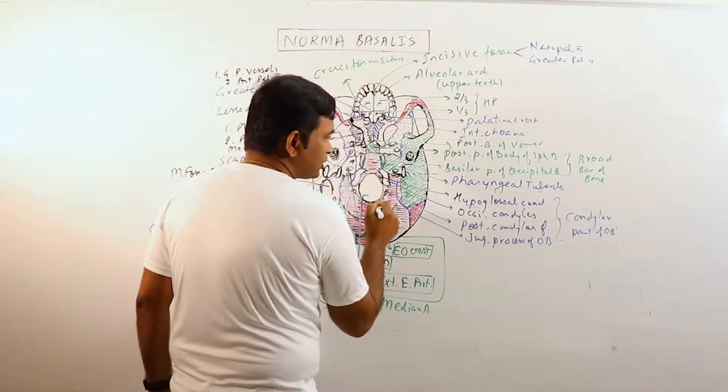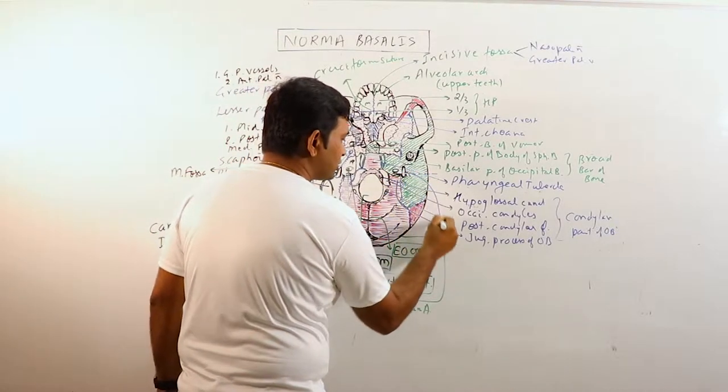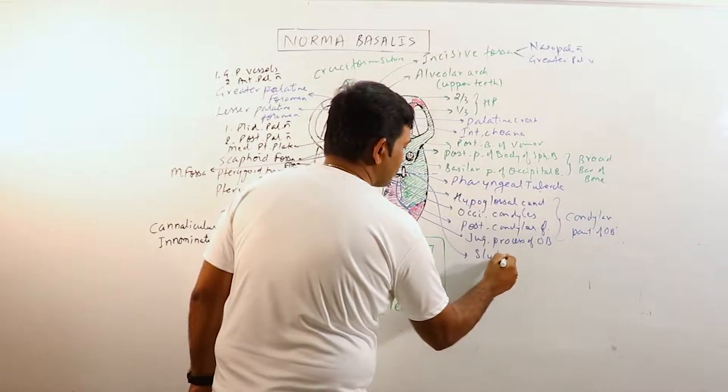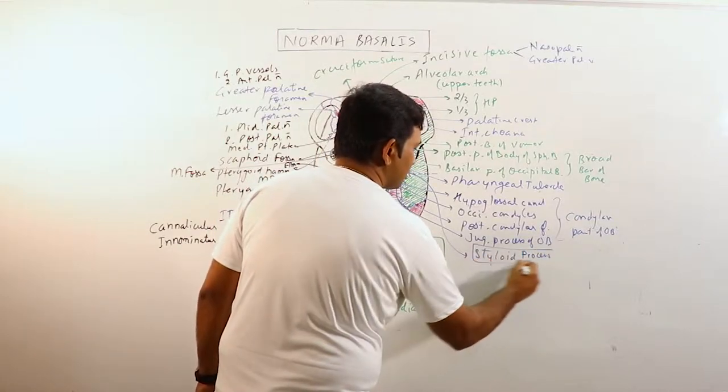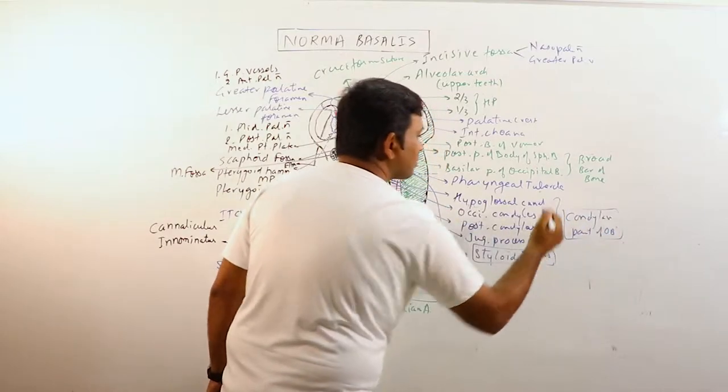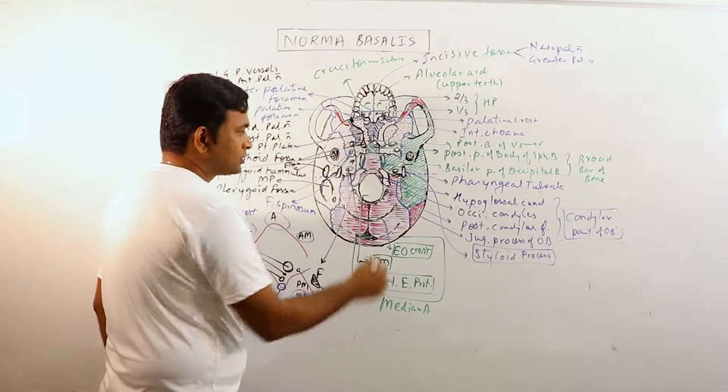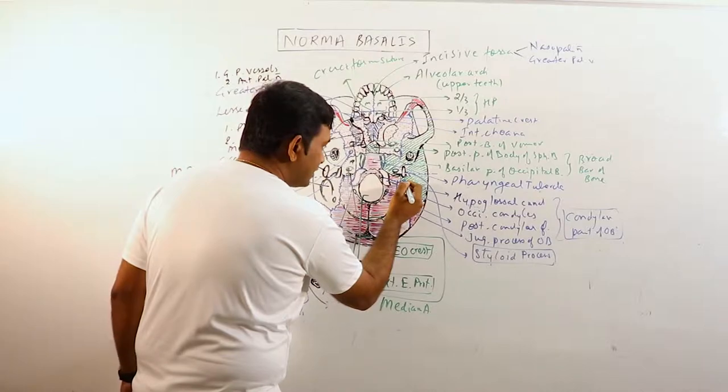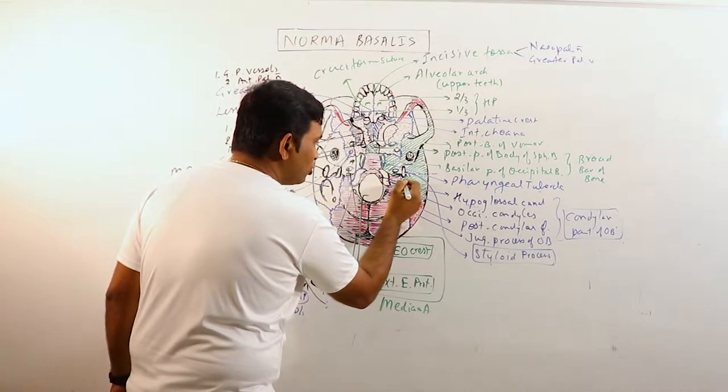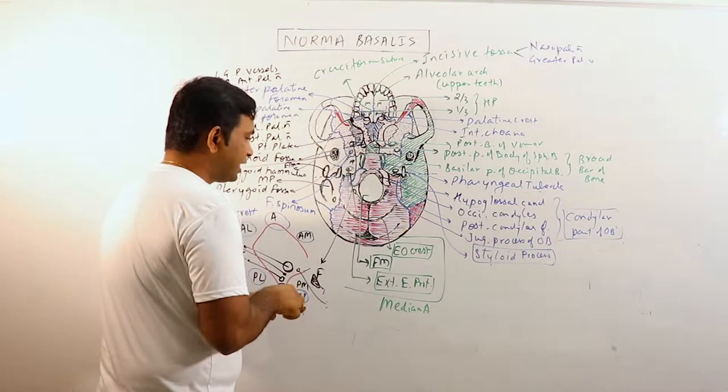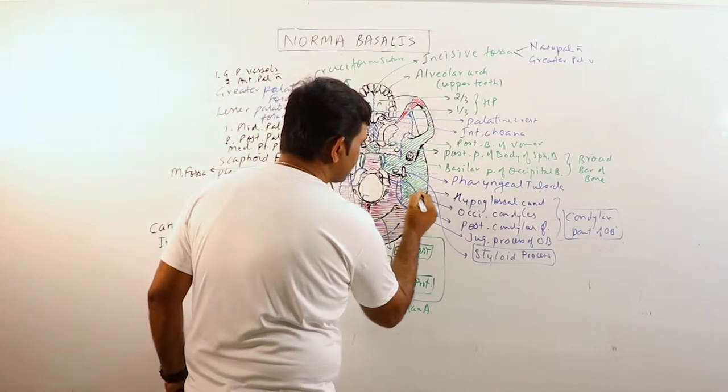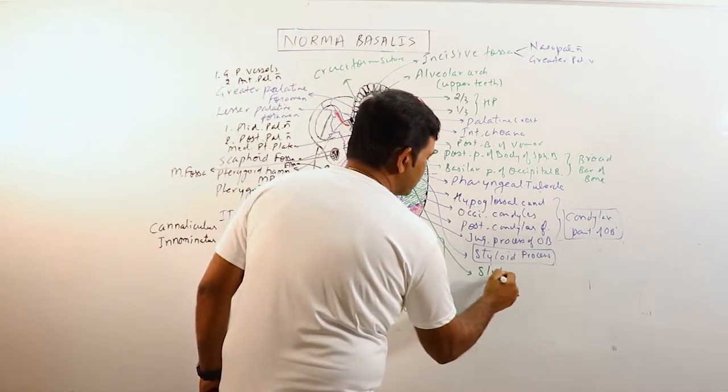Another part which is contributing the lateral area is the styloid process. Just posterior to the root of the styloid process there is a foramen, which is stylomastoid foramen. This is stylomastoid foramen.